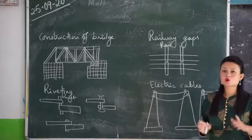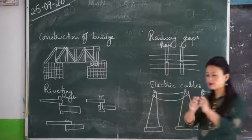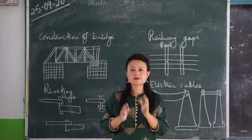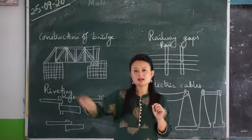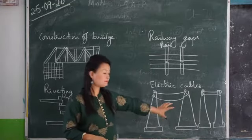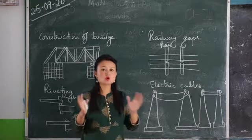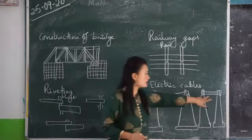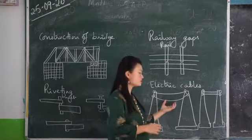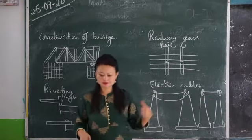During winter, because of the loss of heat, the wires contract. If the wire is placed tight in the beginning, the chances of the wire breaking due to contraction are much higher. That's why the wires are kept loose. During summer the wires sag more, and during winter they are not as sagged — because they have contracted and become tight.